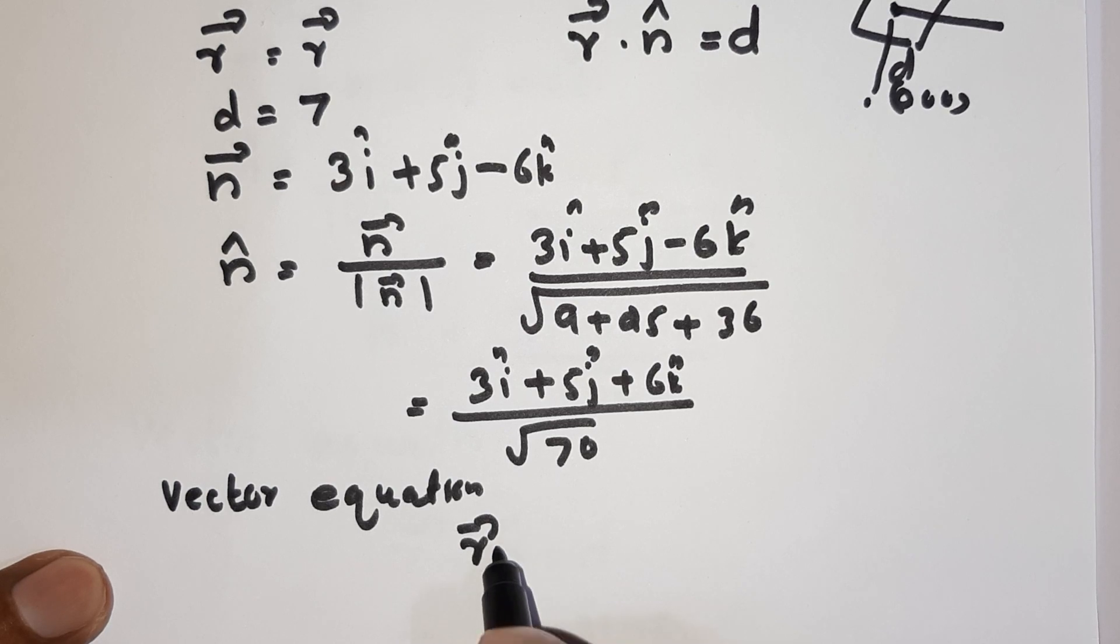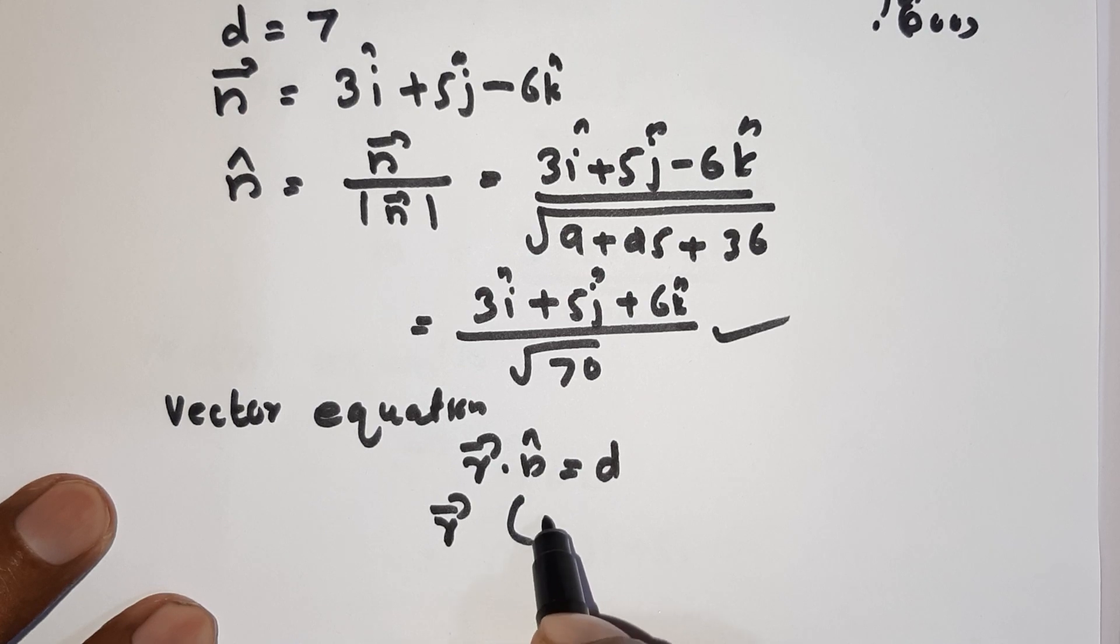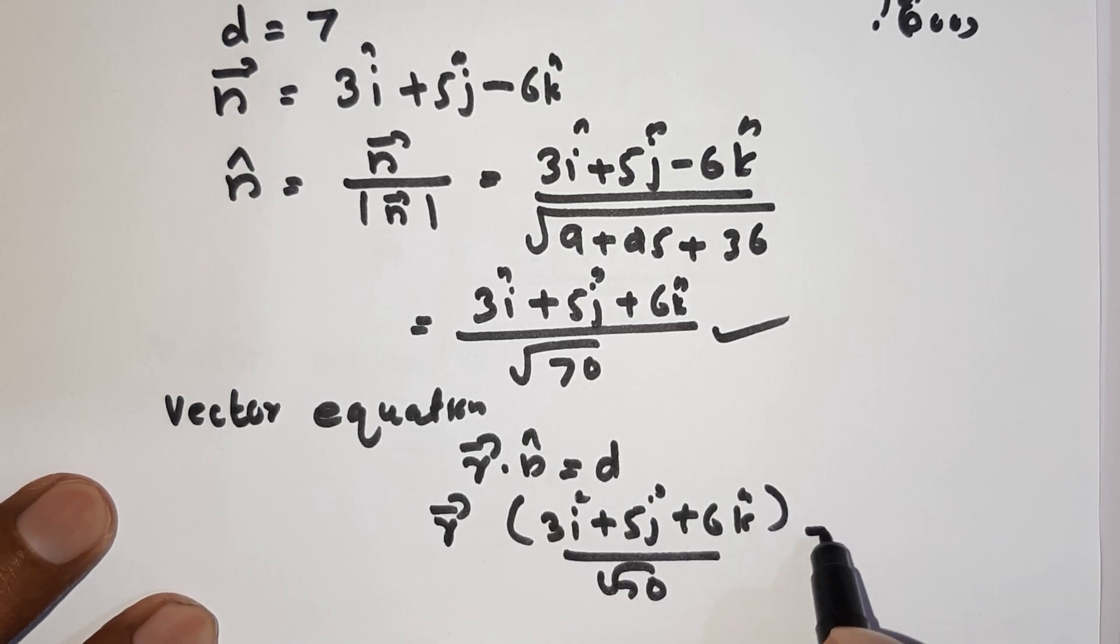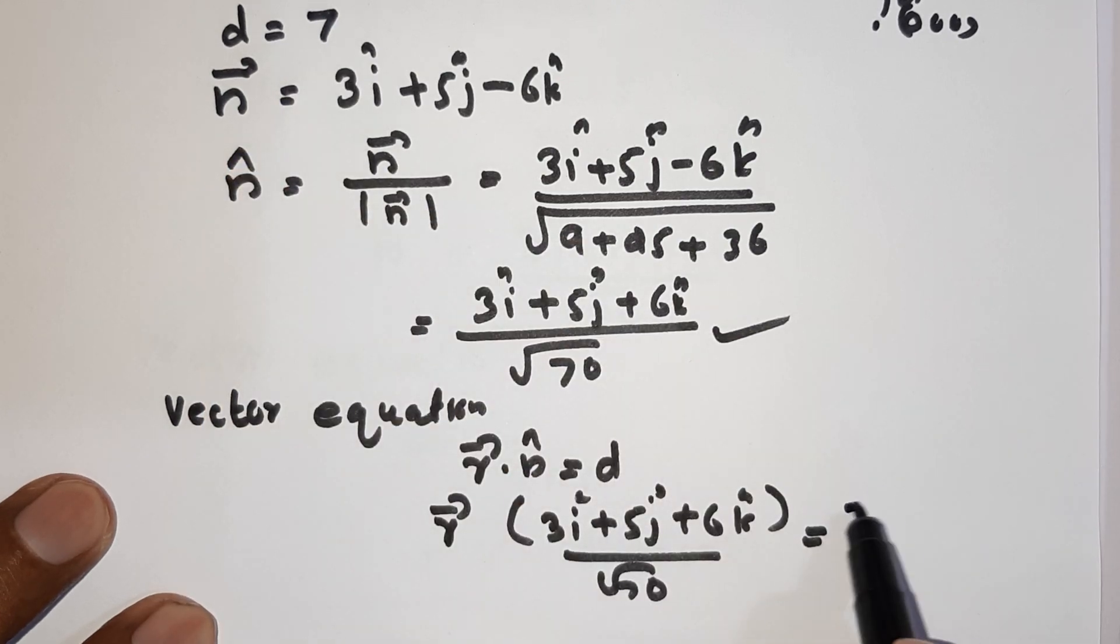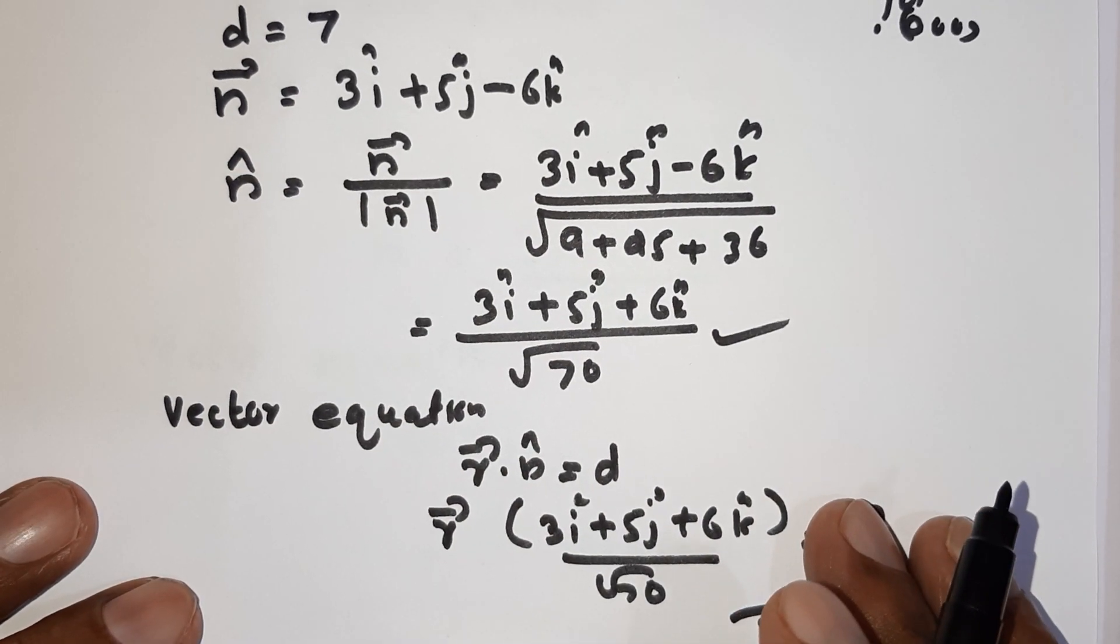The vector equation is: vector r dot (3i plus 5j minus 6k) divided by root of 70 equals 7. This is the vector equation.